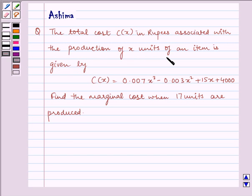C(x) equals 0.007x³ minus 0.003x² plus 15x plus 4000. Find the marginal cost when 17 units are produced.